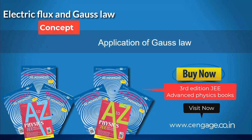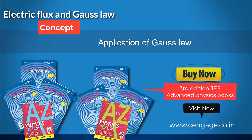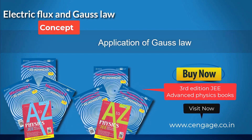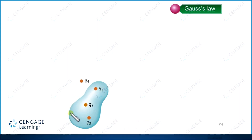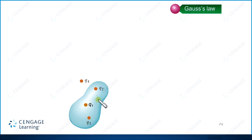Dear students, in this section we are going to discuss one very important concept: the application of Gauss Law. Suppose we are having four point charges Q1, Q2, Q3 and Q4. You can observe in this diagram that charges Q1, Q2 and Q3 are lying in a closed three-dimensional surface, and charge Q4 is lying outside this surface. If we are interested to calculate the electric field at any point on this closed surface, we use Gauss Law.